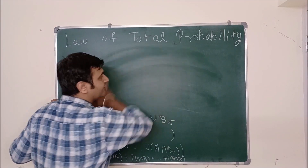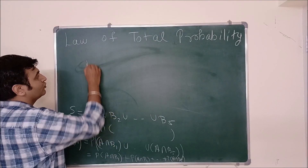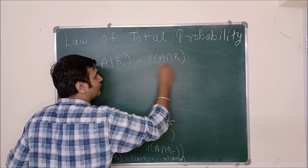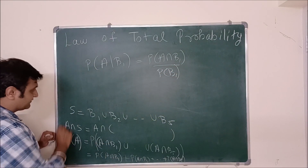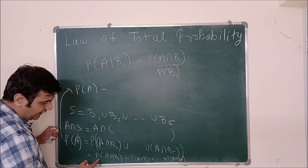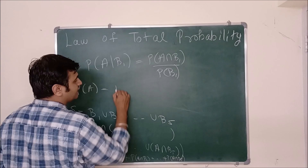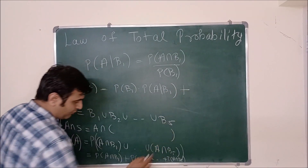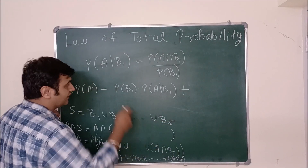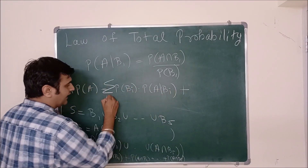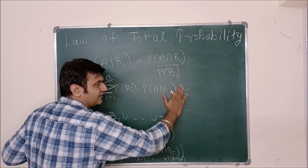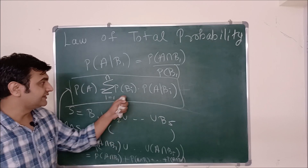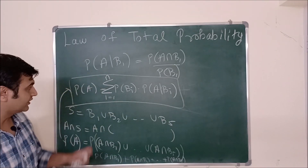If you don't know the intersection probabilities directly, we use the formula for conditional probability. P(A∩B1) = P(B1) · P(A|B1), so the law becomes: P(A) = Σ P(Bi) · P(A|Bi), summing from i=1 to n, where you are dividing into n disjoint subsets. This is the Law of Total Probability expressed in the language of conditional probability.